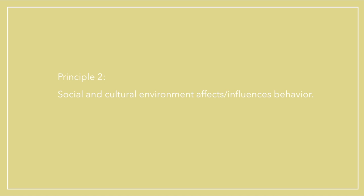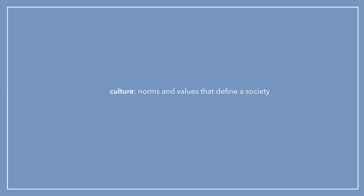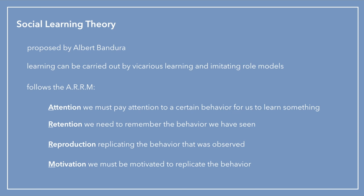Now let's look at principle two, which states that the social and cultural environment affects and influences behavior. Culture is defined as the norms and values that define a society. This is demonstrated by the social learning theory proposed by Albert Bandura. He conducted an experiment involving dolls, examining whether children would copy an adult's behavior of hitting the dolls. The social learning theory states that learning can be carried out by vicarious learning or imitating role models.